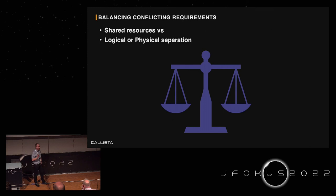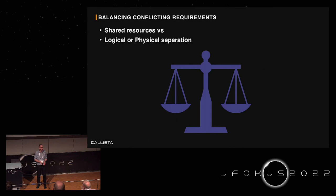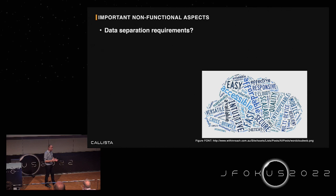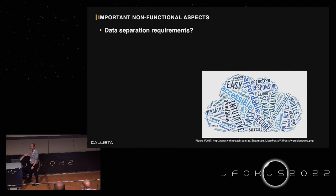We clearly deal with balancing two conflicting requirements. On one hand we'd like to reuse and share as much as possible, but on the other hand we really need to isolate the data of our customers — either logically or even physically. An important non-functional aspect that highly impacts this balancing act is the data separation requirement: how sensitive is your customer data, and how eager are customers to get guarantees that their data is kept completely private? There are also often legal requirements in this area.